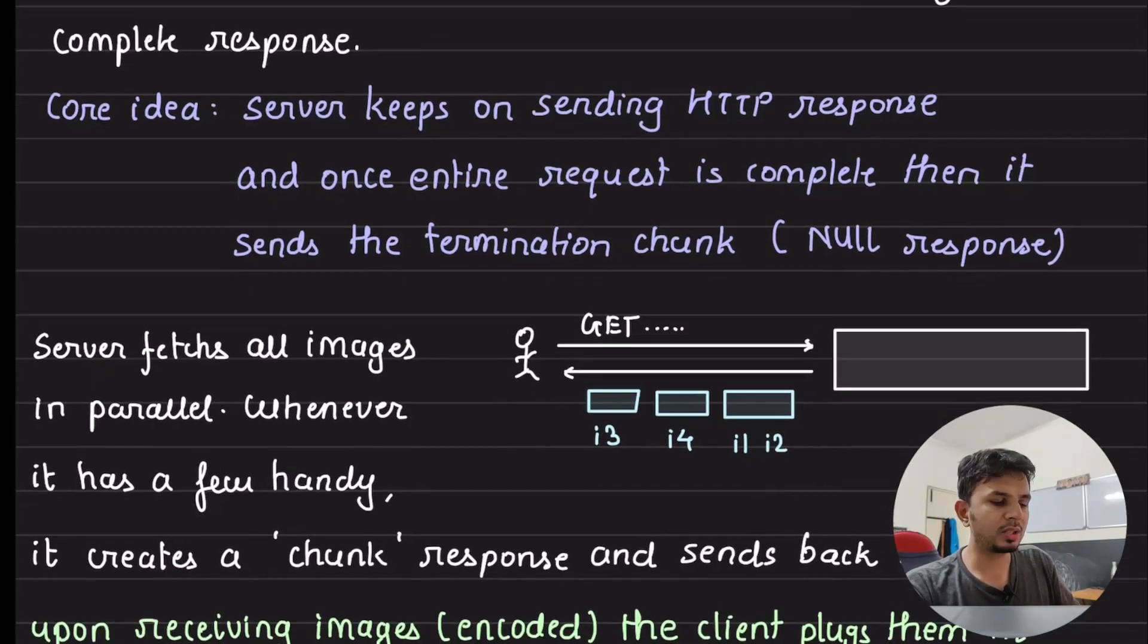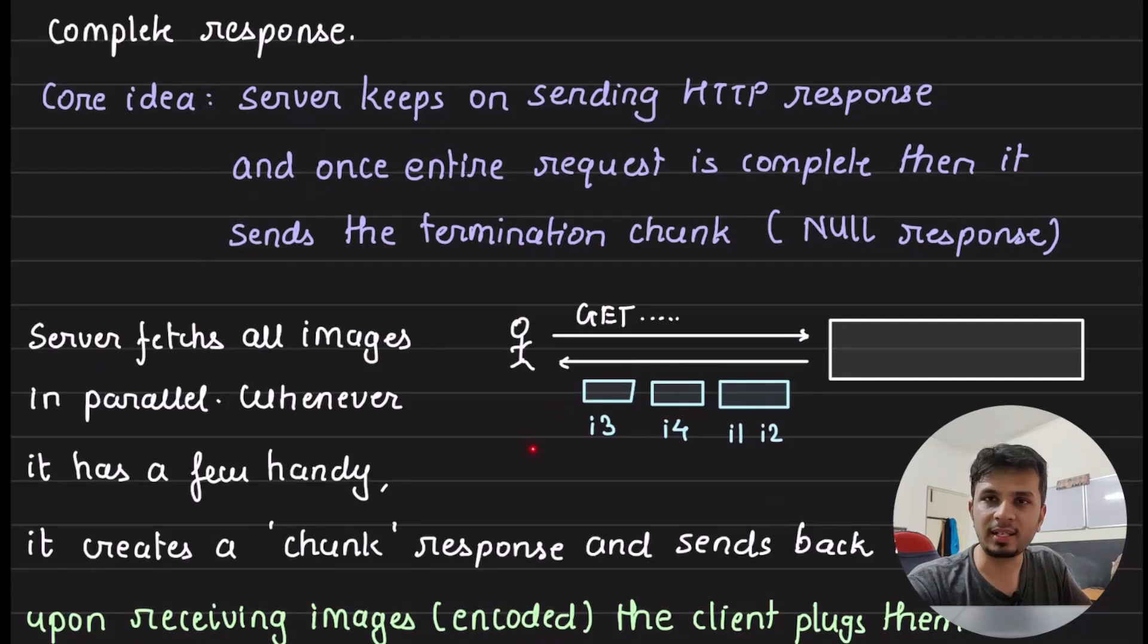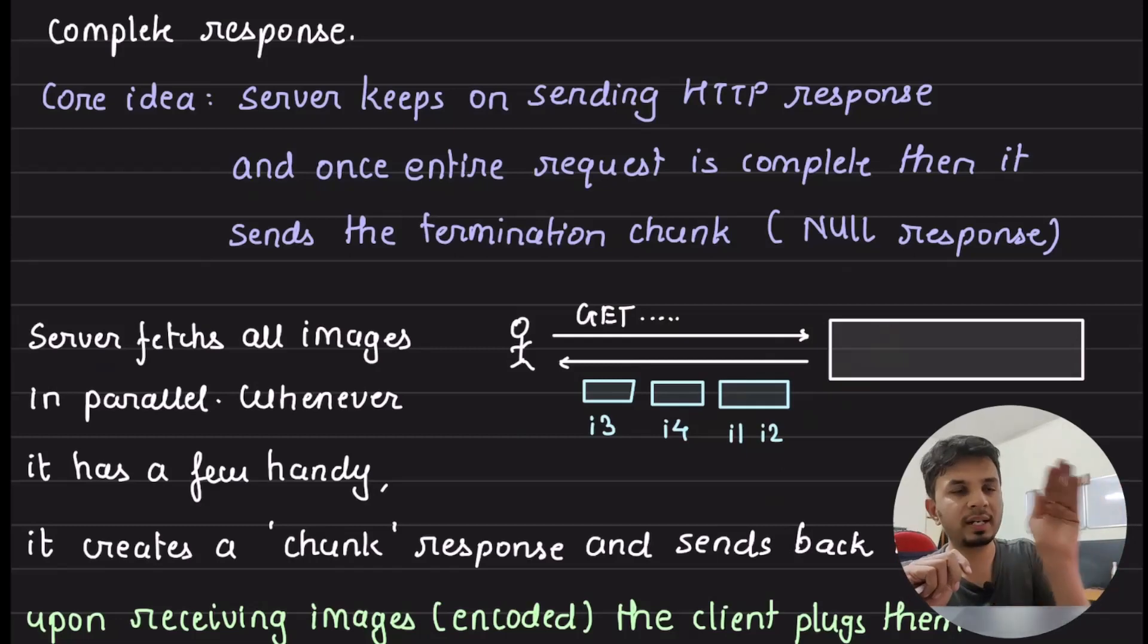The idea here is, that instead of sending just one response to the client, you send response in chunks. As and when you are getting something, you are sending it back to the client. And because you have specified your transfer encoding as chunked, it means that, in every response that your server is sending. It's not that your client is sending the request and server is sending the response. Your client sent one request. This one request that contains all the path.